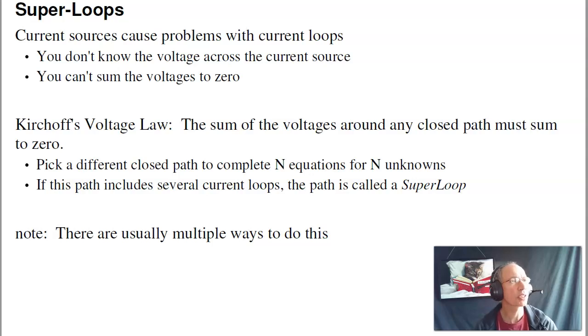Super loops are an extension of current loops. Current loops allow you to solve for N equations and N unknowns where the unknowns are current loops. You do that by summing the voltages to zero around each loop. Sometimes you can't do that. If I have a current source, I have no idea what the voltage is. The voltage is whatever it takes to set the current, and whatever it takes doesn't help in writing your loop equations.